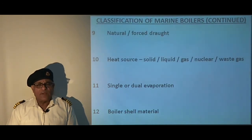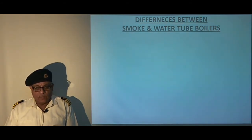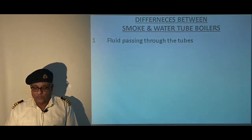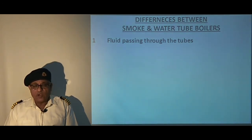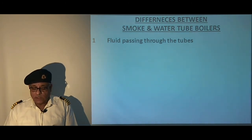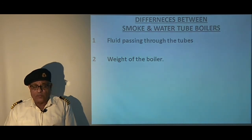Now we will see the differences between smoke tube and water tube boilers. First, regarding fluid passing through the tubes: smoke tube boilers carry smoke or flue gases in the tubes which heat up the surrounding water, whereas water tube boilers carry water and steam in the tubes which are heated by the flue gases flowing over the tubes. Regarding weight, the smoke tube boiler is three times heavier for the same heating surface area, whereas the water tube boiler is lighter, resulting in a reduction in dead weight.